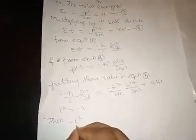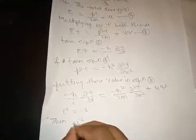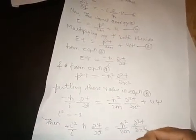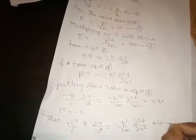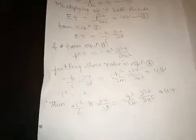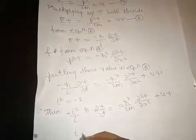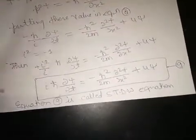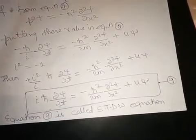Since i² equals minus 1, then simplifying and canceling terms: iℏ(∂ψ/∂t) equals minus (ℏ²/2m)(∂²ψ/∂x²) plus Uψ. This is equation 9, called Schrödinger time dependent wave equation.